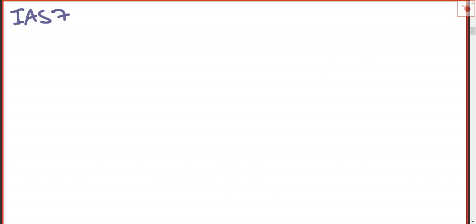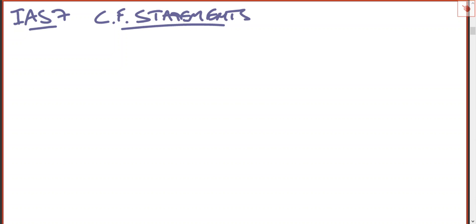In this session we're going to take a quick look at IAS 7, which is cash flow statements — or the statement of cash flows as we should really call it. We need to understand what is contained in this and what the examiner is likely to examine. Cash flow statements — I know people don't like them, but they're just so easy if you stick to some very basic things.